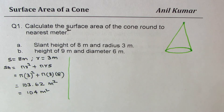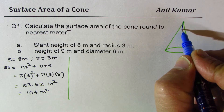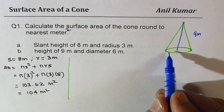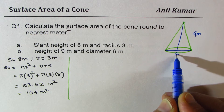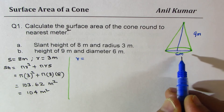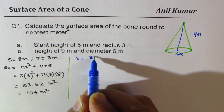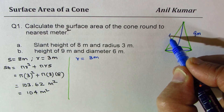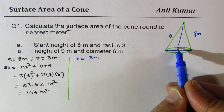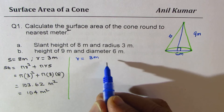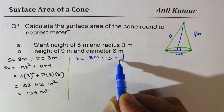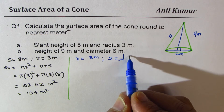In the second part, we are given a cone with a height of 9 meters and a diameter of 6 meters. The radius is half the diameter, which is 3 meters. We need to find the slant height. The slant height s equals the square root of 9² plus 3².